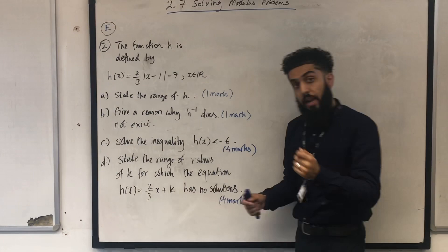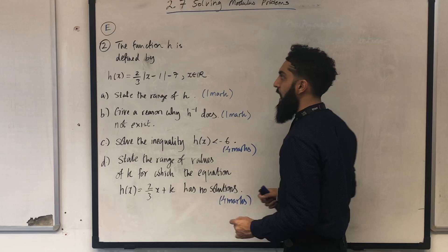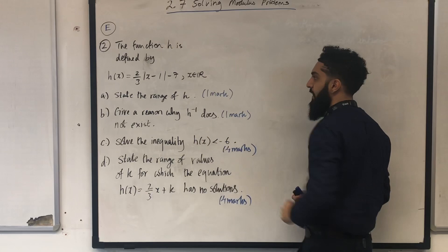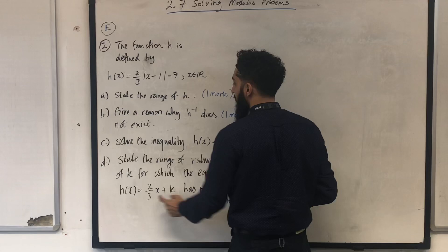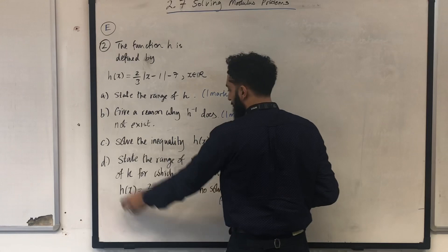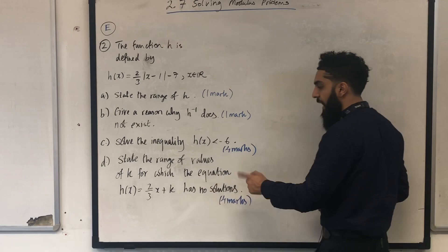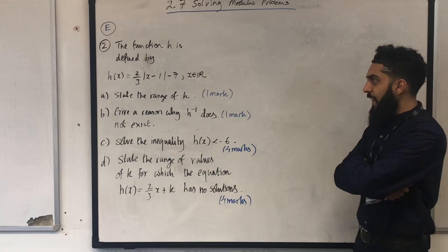Let's move on to exam question number 2. The function h is defined by h of x equal 2 over 3 modulus of x minus 1 minus 7, where x is a real number. Part a: state the range of h, one mark. Part b: give a reason why h inverse does not exist, one mark. Part c: solve the inequality h of x is less than minus 6, four marks. Part d: state the range of values of k for which the equation h of x equal 2 over 3 x plus k has no solutions, four marks.